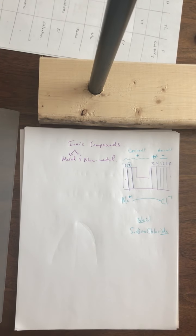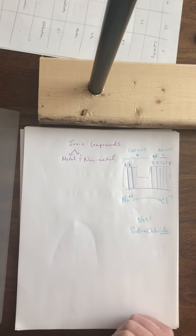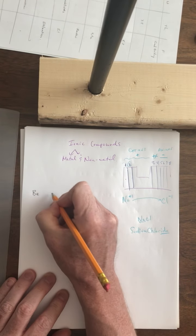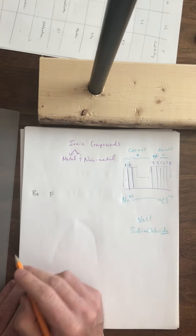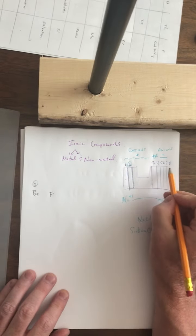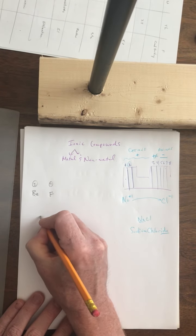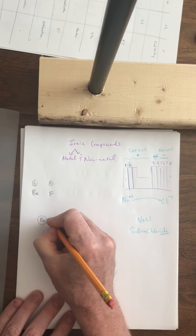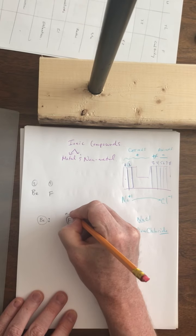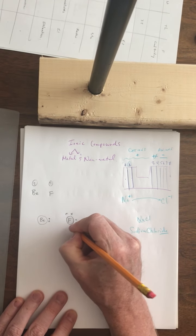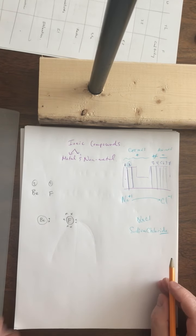We get sodium chloride — the metal is named first, and instead of 'chlorine' it becomes 'chloride,' changing the ending to '-ide.' Now let's try beryllium and fluorine. Beryllium is an alkaline earth metal in the second family, and fluorine is a halogen in the seventh family. I'll draw beryllium with two electrons in its outer orbit and fluorine with seven, using X's and dots to keep them visually distinct.